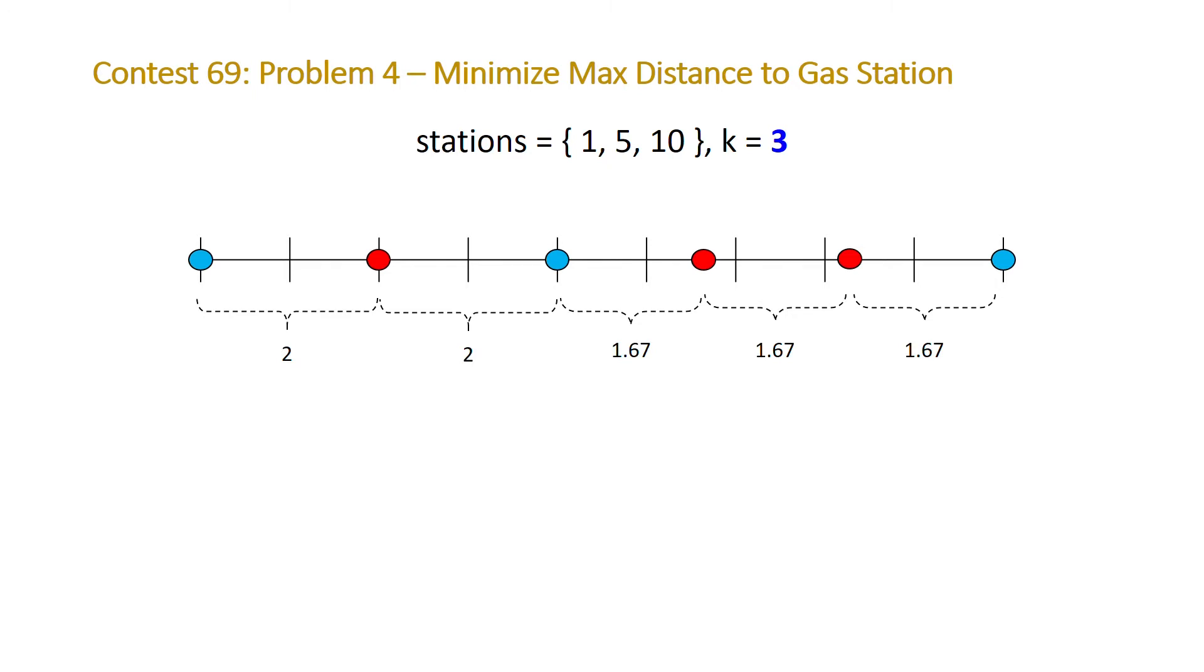And you'll see that what we actually want to do is split the original second interval, the interval between our second and third gas stations, into three equal distances or intervals. And this way we're keeping all of the distances at a minimum. So this will inform our algorithm.